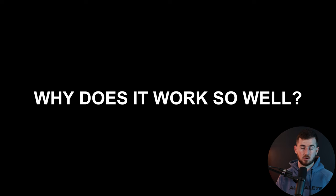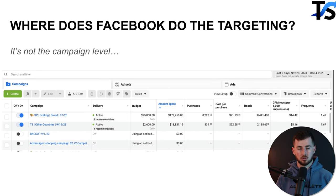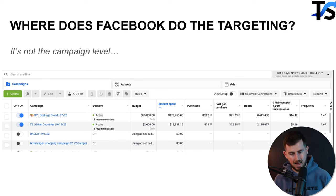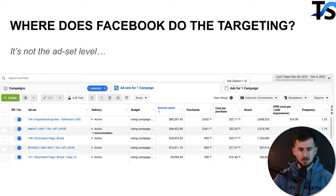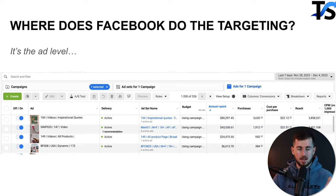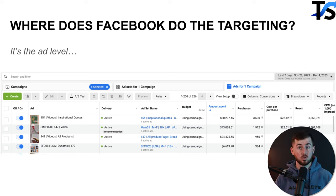Why does broad targeting work so well? You need to understand how the algorithm works. Where does Facebook actually do the targeting? Some say the campaign level, some say the ad set level, some say the pixel. It's actually none of those — it's the ad level. And not just the ad level: each individual ad has its own audience it targets.